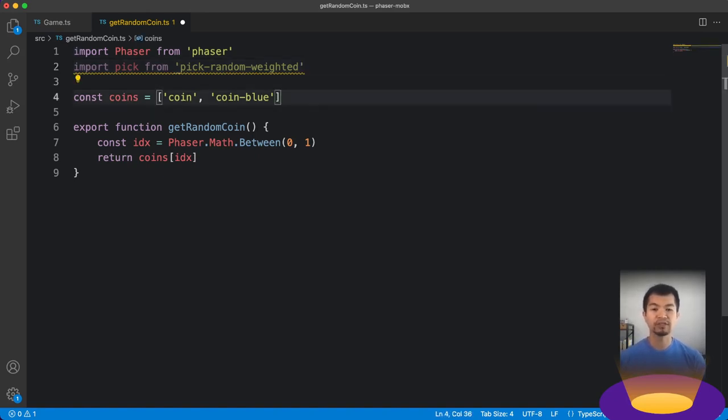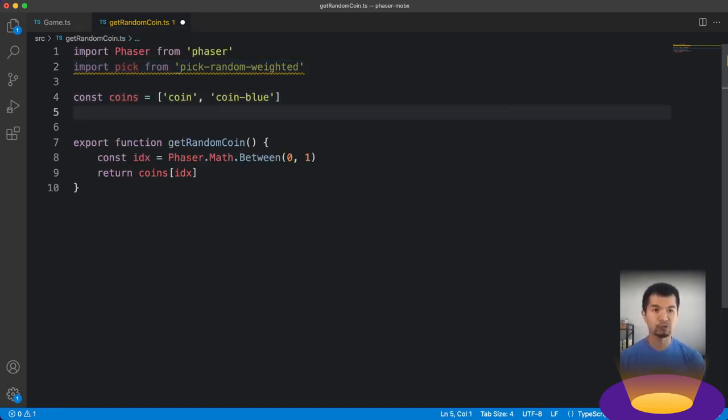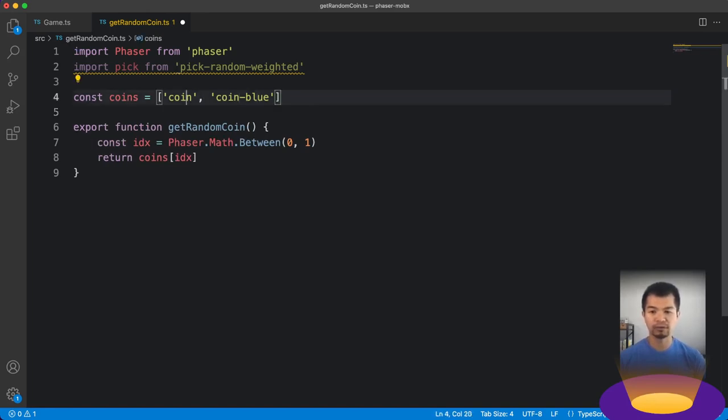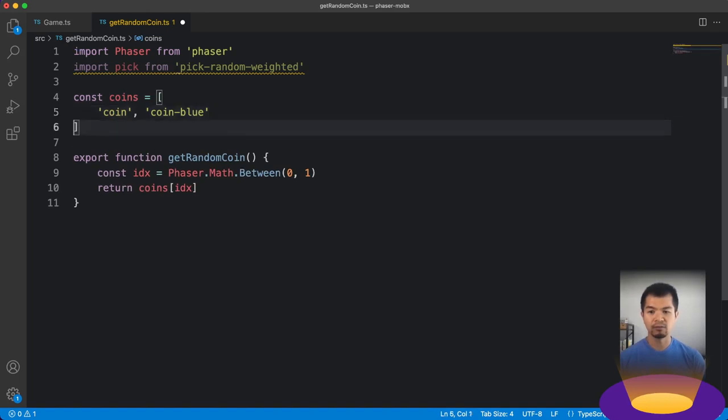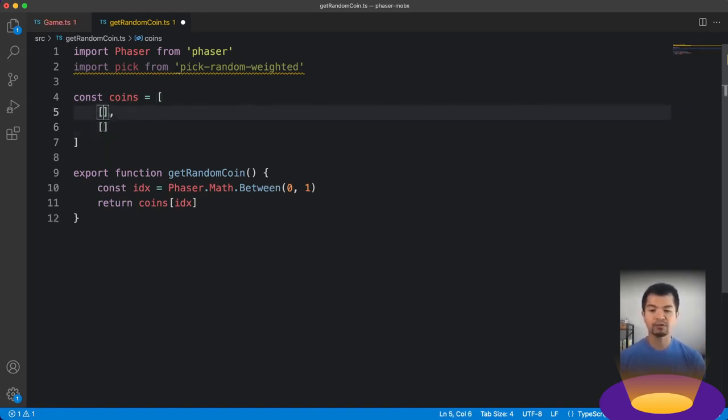But so what we have here is this pick function and we give it an array. We don't have type for that. Let's make an array. So instead of coins here, we're going to do coins. And then what our coins array is going to have is two tuples. That's just two arrays in it like this. First one, so the first one is the key. The first entry is the key.